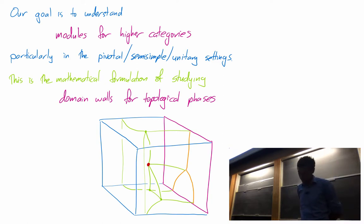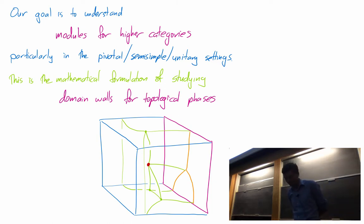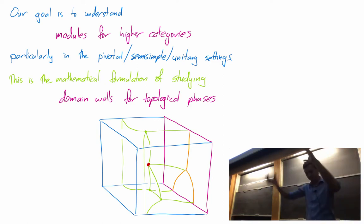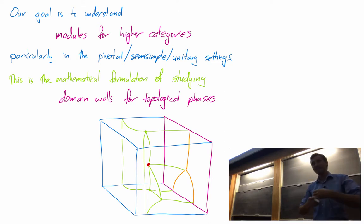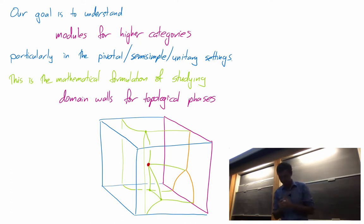Something to apologize about for the mathematicians: we're not attempting to do things in the greatest generality possible, although you might fear that given that I'm talking about higher categories. We will very happily assume that things are pivotal — that is, they have all sorts of rotational symmetry — that things are semi-simple, and that all our categories are unitary with positive definite inner products. Some of this might work in more generality, some probably won't, but today there's that.